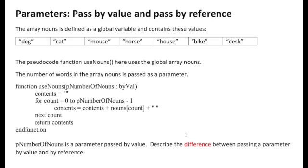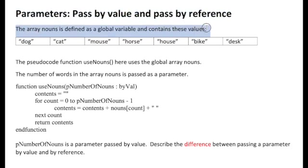In this video we will look at the use of pass by value and pass by reference parameters. Let's now look at the detail of the exam question. The array nouns is defined as a global variable containing the following strings: dog through to desk.